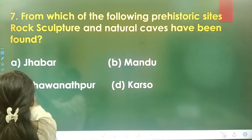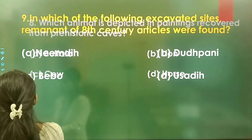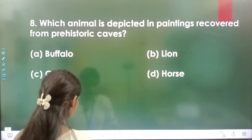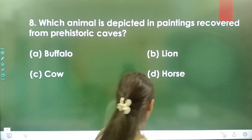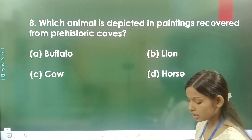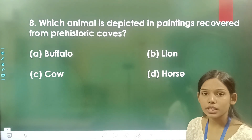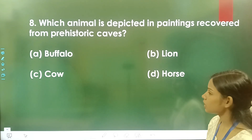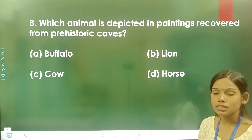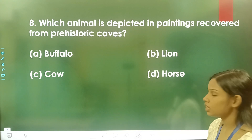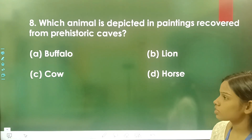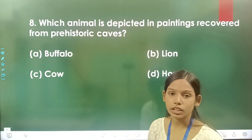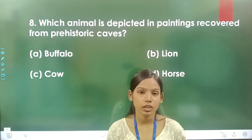Question number 8: Which animal is depicted in paintings recovered from prehistoric caves? Option A is Buffalo, option B is Lion, option C is Cow, and option D is Horse. This is your homework question — write and comment your answer in the comment box.